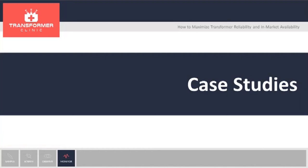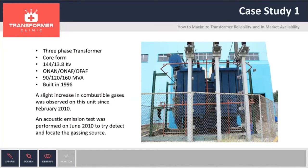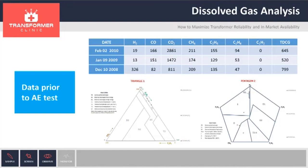The first case study is a transformer we tested in South America. This is a 160 MVA transformer built in 1996 — a Corford transformer. We did a test because the transformer started gassing in February 2010. The main gas on this DGA is ethane. Ethane indicates a low-temperature fault on the transformer. When applying the Duval Triangle, we can see the fault started on low-temperature fault T1 and it moved to a medium-temperature T2. Using Pentagon 2, we can see that the fault at the beginning was stray gassing and later evolved to an overheating.